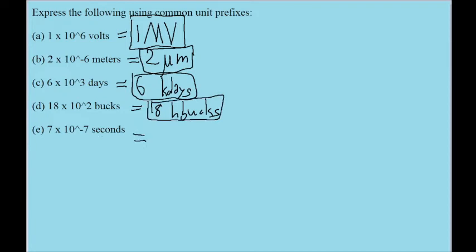Part e is probably the trickiest one, because it's 10 to the power of negative 7. As far as I know, negative 7 isn't an exponent that has a very common unit prefix — I even searched online before recording this and couldn't find anything. So for this part, you have to rewrite the number. One way is to move the decimal one place to the left, rewriting it as 0.7 times 10 to the power of negative 6. Because we've decreased the coefficient, the exponent goes up. You can then write it as 0.7 microseconds, since we've replaced the exponent with negative 6, which has a common prefix.